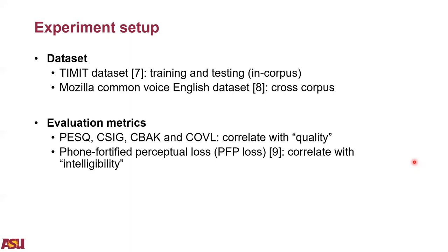We have five evaluation metrics. PESQ, CSIG, CBAK, and COVL are more traditional ones correlated with speech quality. The form-filtered perceptual loss, PSP loss, is correlated with intelligibility.